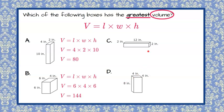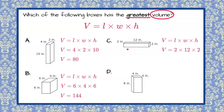Our prism in choice C: we write down our formula and then length 2, times width 12, times height 2. So 2 times 12 times 2 — noting that the order doesn't matter and length, width, and height are interchangeable. 2 times 12 is 24, times 2 is 48.